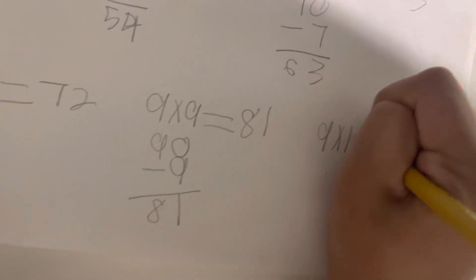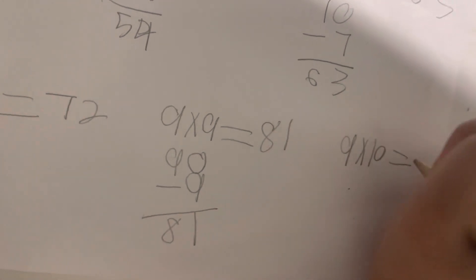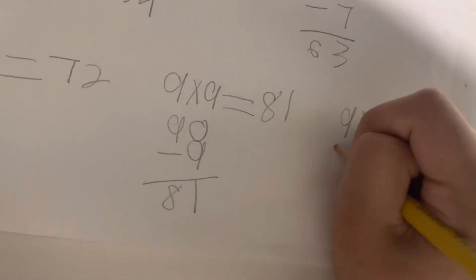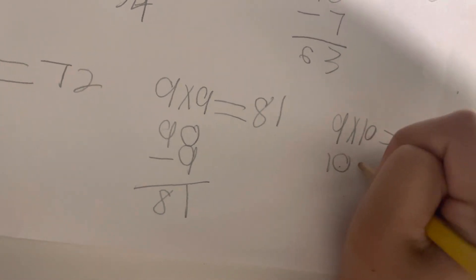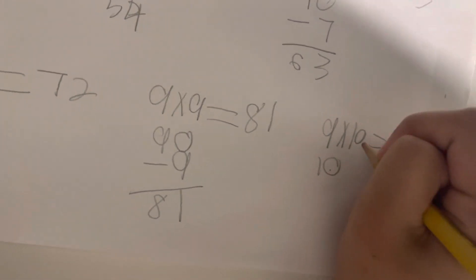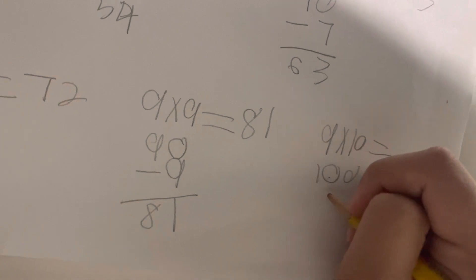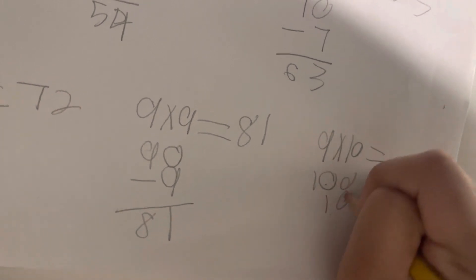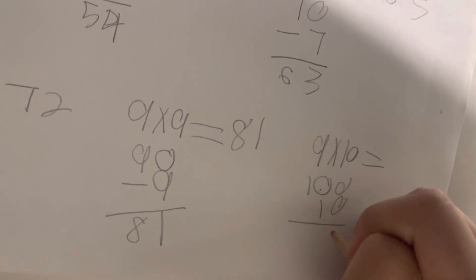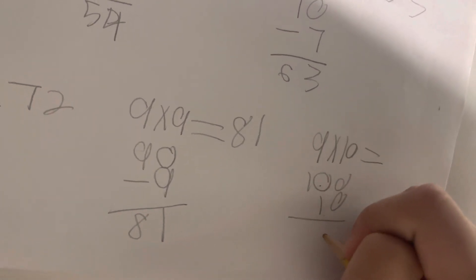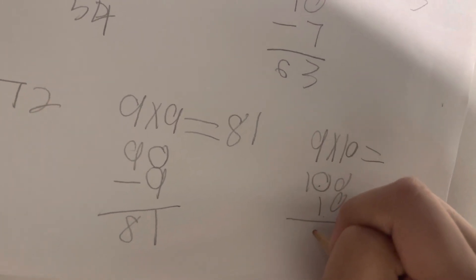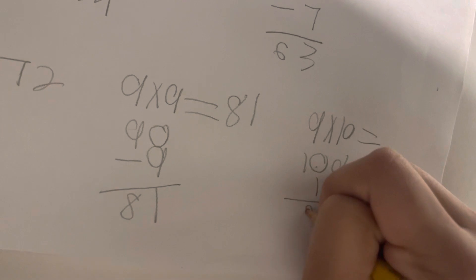9 times 10 equals. You add a 10, then put a 0 at the end, then minus the same number. It equals 90.